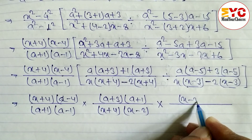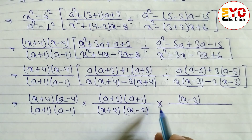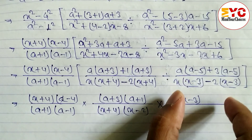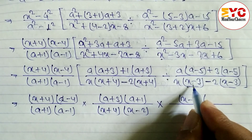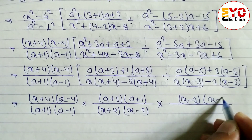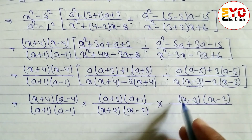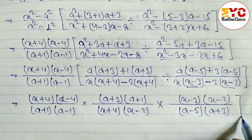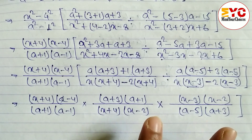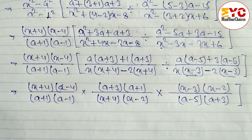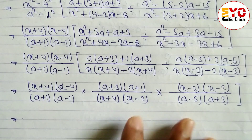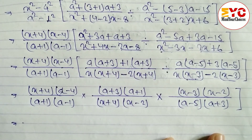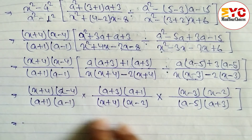For the reciprocal, the denominator is written in the numerator and the numerator in the denominator. We can see x minus 3 times x minus 3, so we take x minus 3 as common, leaving x minus 2. Similarly a minus 5 times a minus 5, so we take a minus 5 as common, leaving a plus 3. Now we have fully factorized the expression and are ready to reduce it.